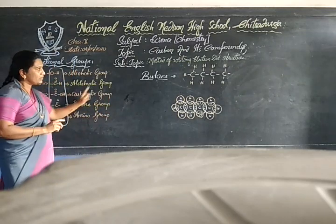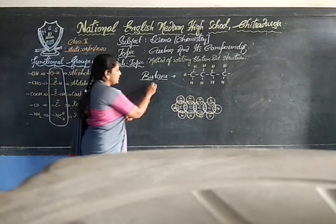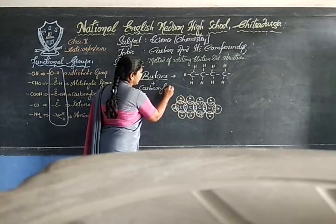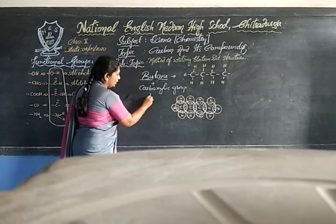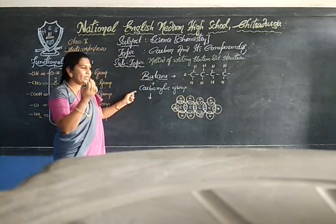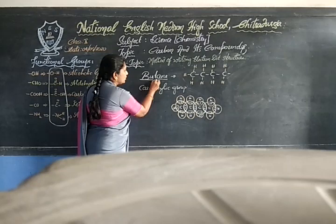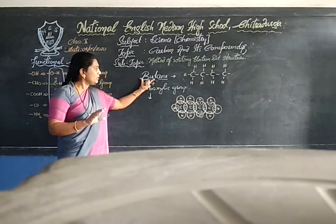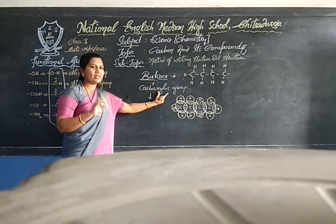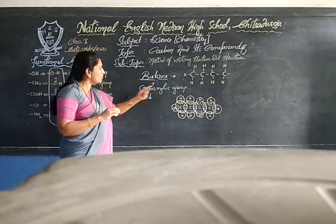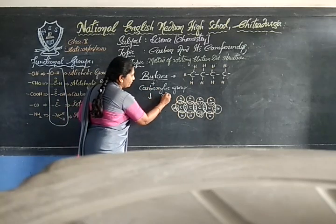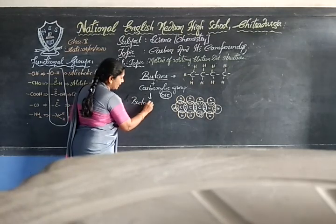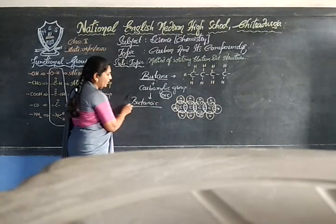When butane combines with the carboxylic functional group, one hydrogen is replaced by the functional group and the name changes to butanoic acid. The first three letters come from 'buta-' (the parent chain) and the suffix '-oic acid' comes from the carboxylic functional group. So butane combined with the carboxylic group becomes butanoic acid.